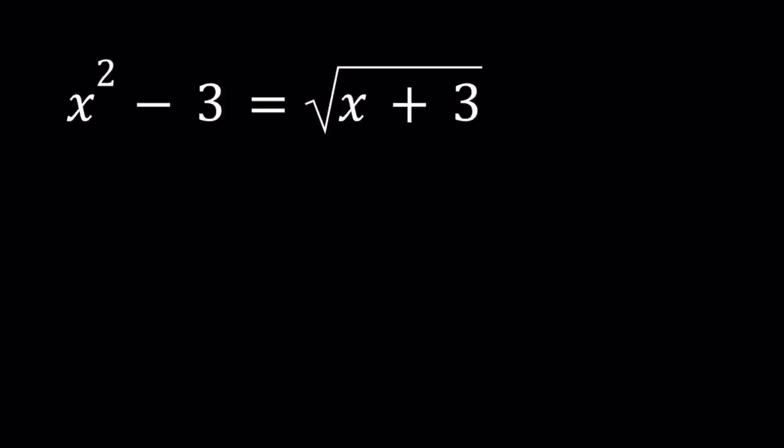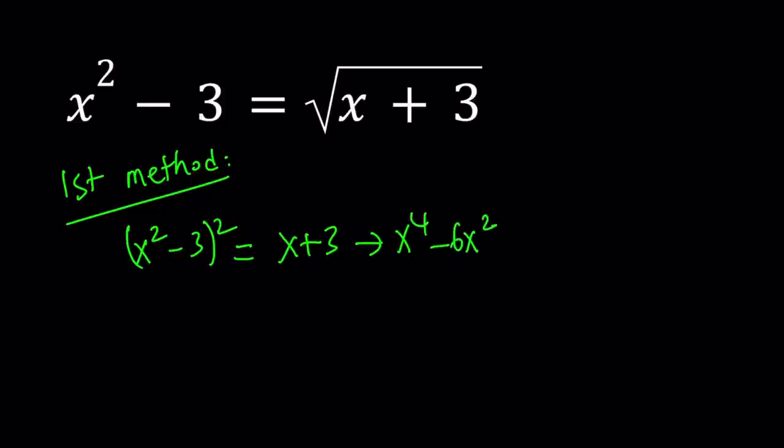Alright, so I'll be presenting two methods. Let's start with the first one. So for the first method, I'll be using a brute force method. Square both sides, eliminate the radical. And from here we get the following: x to the fourth minus 6x squared. Remember, a minus b quantity squared.